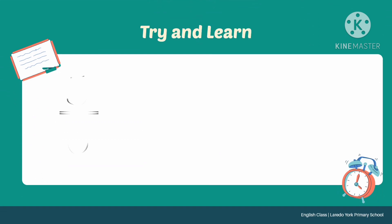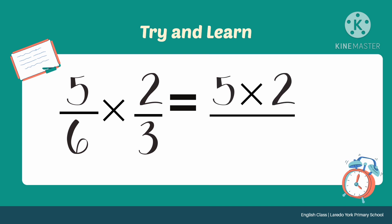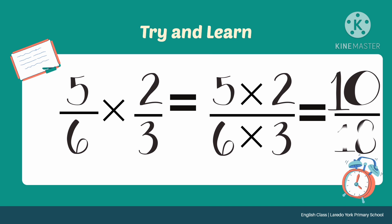Proceed tayo with the solution. 5 over 6 times 2 third. The rule is we multiply the numerator 5 times 2, then multiply the denominator 6 times 3. 5 times 2 is 10, and 6 times 3 is 18.